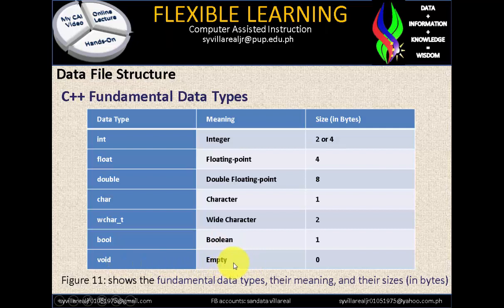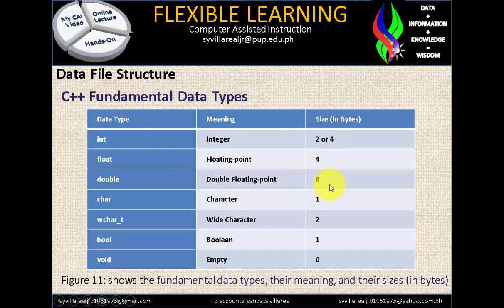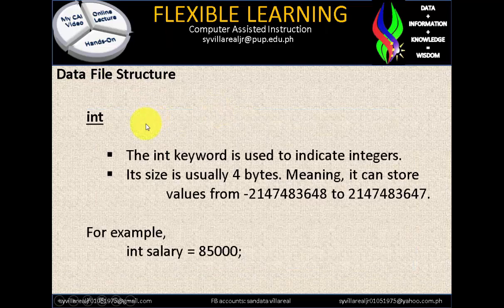Void is considered to be empty. We have 7 fundamental data types in total. In terms of size: integer is 2 or 4 bytes, floating point is 4, double floating point is 8, character is 1, wide character is 2, boolean is 1, and void is 0. Notice that double floating point has the largest size in memory capacity.